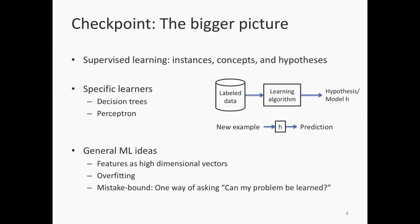Along the way we've seen a few general machine learning ideas: instances can be seen as feature vectors in some high-dimensional space; we looked at overfitting somewhat informally; and we spent time examining what it means to learn — from the perspective of the mistake bound model, where we define success as the learner stopping making mistakes over the stream of examples.